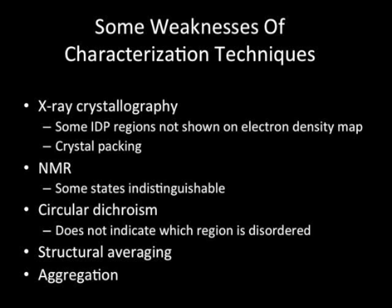Some weaknesses of these techniques: for X-ray crystallography, some disordered regions are not shown on the electron density map, and crystal packing can cause an ordered state to appear disordered. For NMR, it sometimes cannot distinguish between thermodynamic states, such as between disordered and pre-molten globule. Circular dichroism does not indicate the region of disorder, and there is overall structural averaging and an aggregation problem.